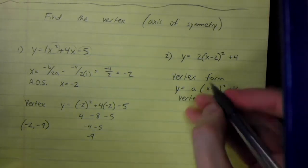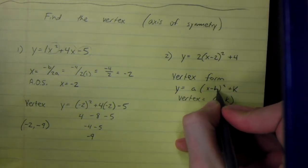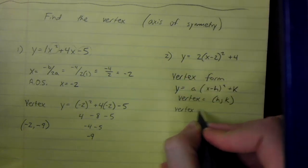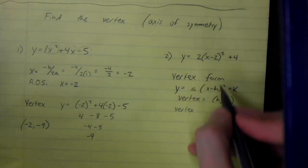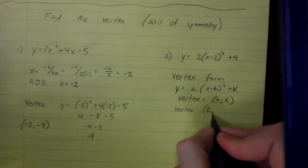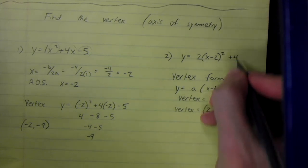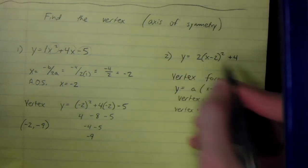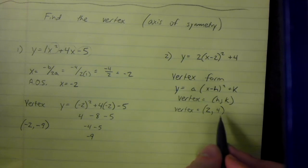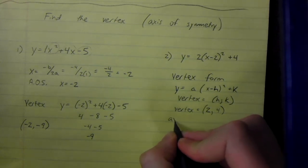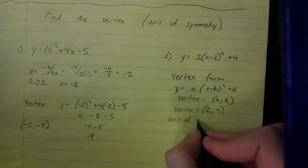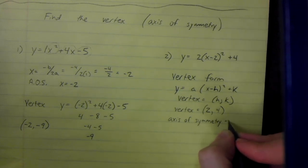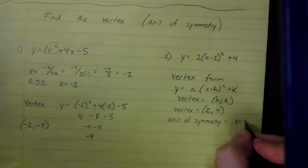Notice in the formula that h is negative. So when we see a negative 2 in the equation, since the formula is (x minus h), h has to be a positive 2. And k has to be positive 4. So the vertex in vertex form is easy to find — in this case it would be (2, 4). The axis of symmetry is just the x value of the vertex, so the equation is x equals 2.